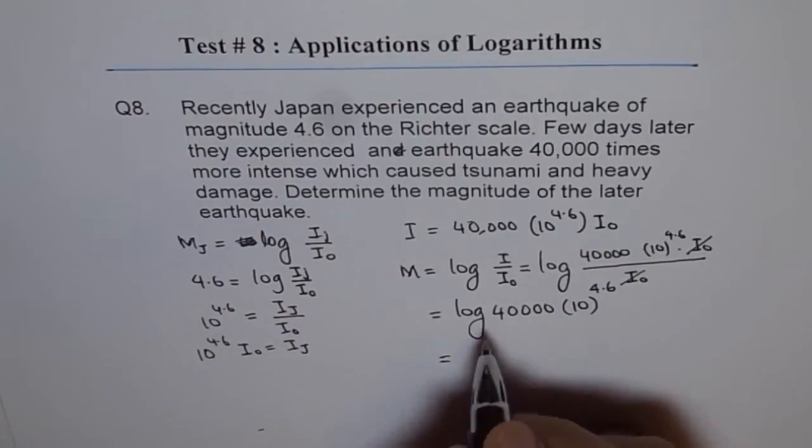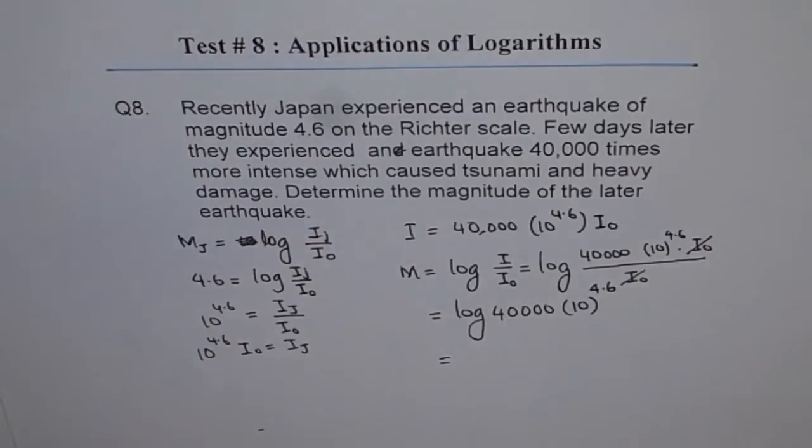We can use a calculator to calculate this value. Log of 40,000 times 10 to the power of 4.6 equals 9.20.